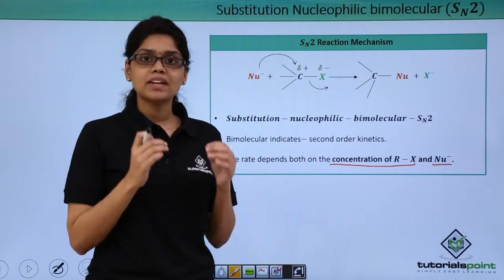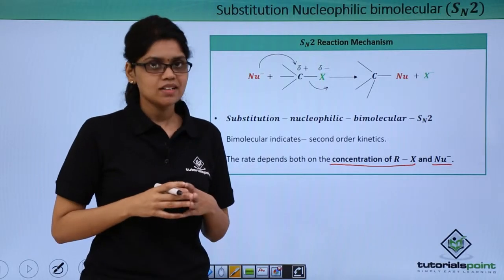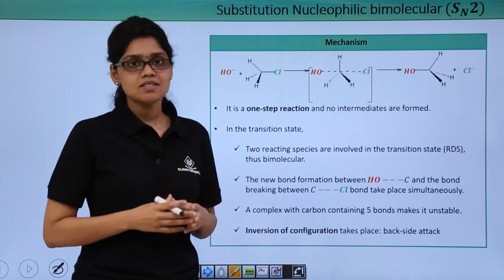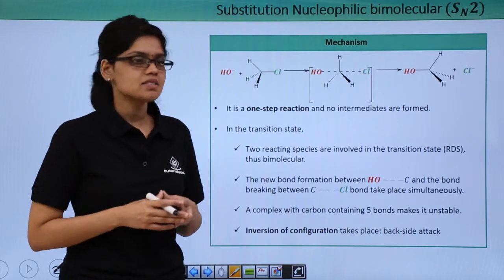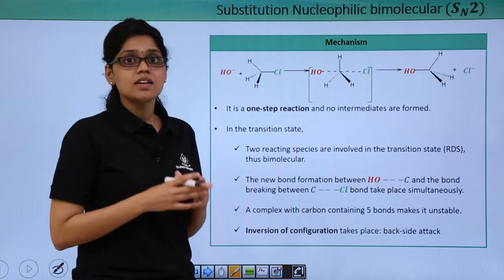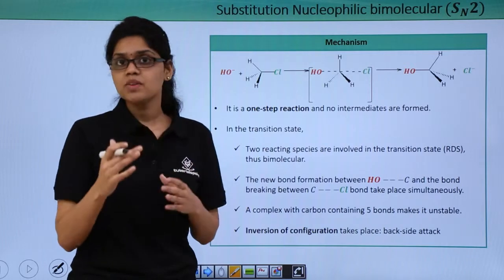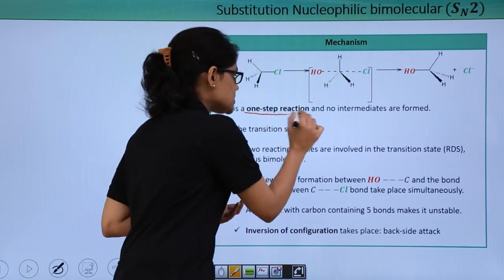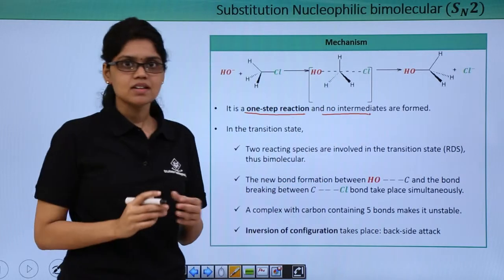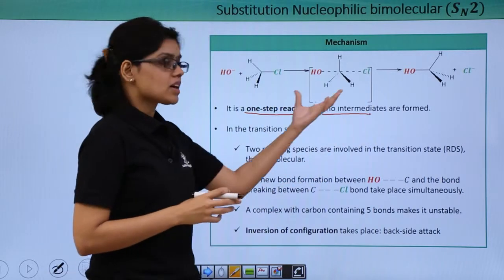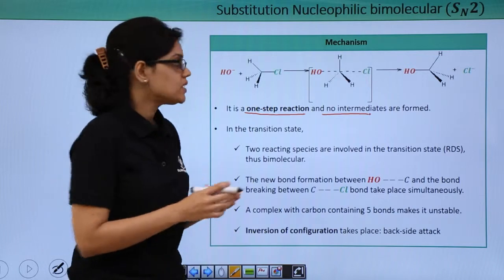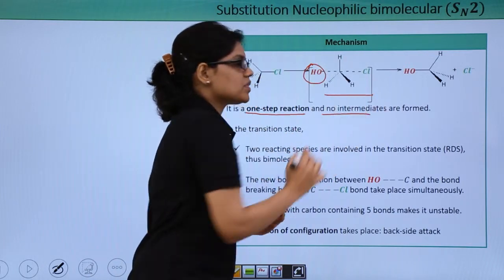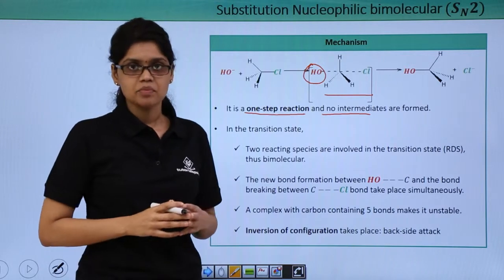Let us try to understand the mechanism of SN2 reaction by taking an example. Here we have taken OH⁻ as a nucleophile and the substrate is CH₃Cl. Unlike SN1 reaction which was a two-step process, SN2 reaction is a one-step process and no intermediates are involved. If you look at the transition state, you can see that it contains both the nucleophile OH⁻ as well as the substrate, which is the RX or alkyl halide.